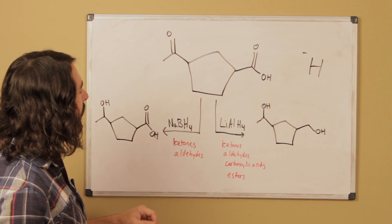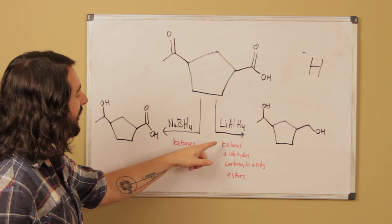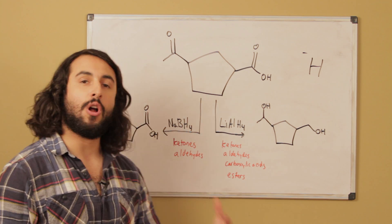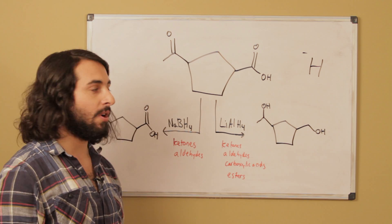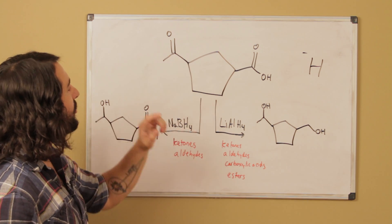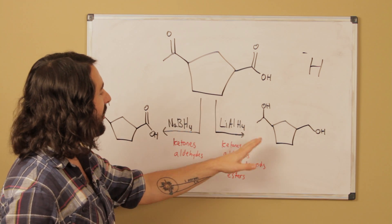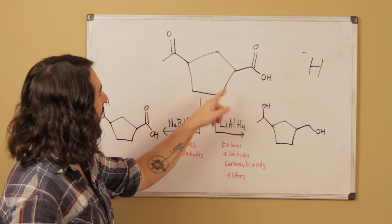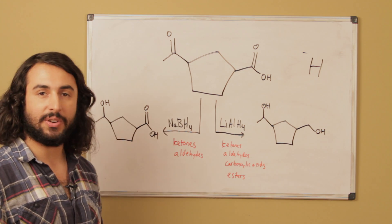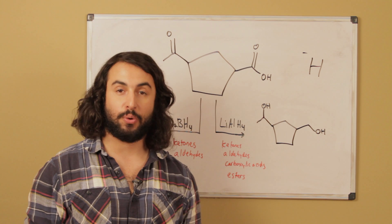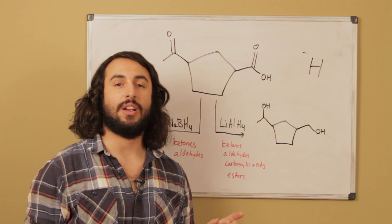However, lithium aluminum hydride is able to reduce ketones, aldehydes, carboxylic acids, and esters. It is a stronger reducing agent, so it is able to reduce not just this but also this. And so as a result, we can see in the product that the ketone has been reduced to the secondary alcohol, just as it has over here, but in addition the carboxylic acid has been reduced to the primary alcohol.